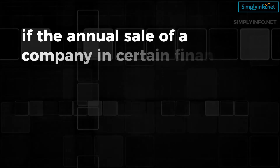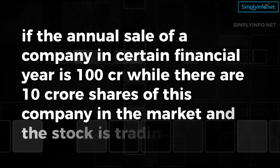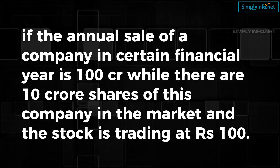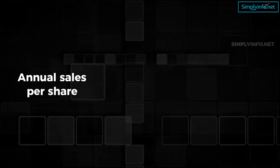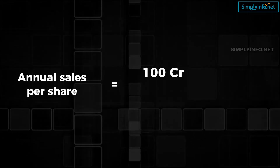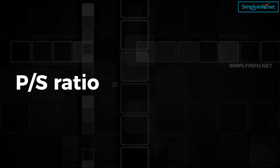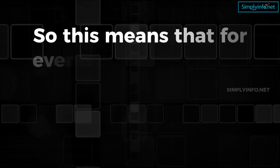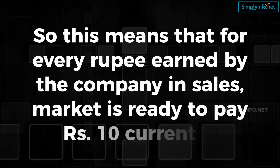For example, if the annual sale of a company in a certain financial year is 100 crore, while there are 10 crore shares of this company in the market and the stock is trading at rupees 100, the PS ratio would be calculated as: annual sales per share equals 100 crore divided by 10 crore, which equals 10. PS ratio equals 100 divided by 10, which equals 10.